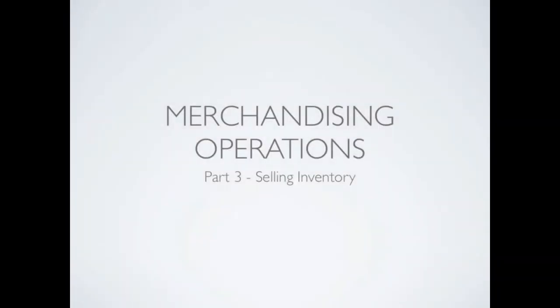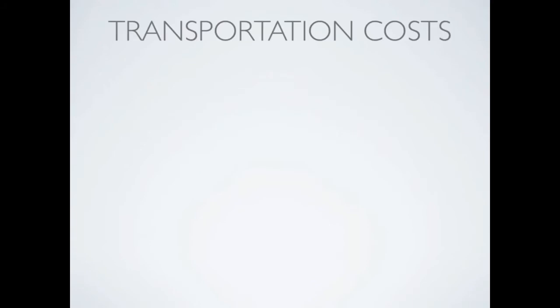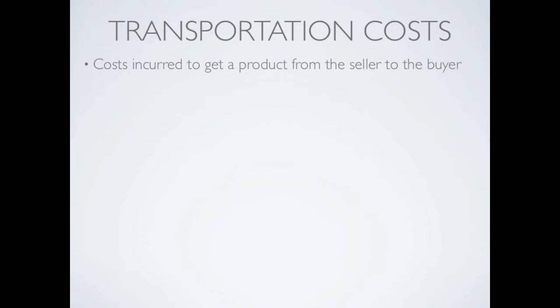This is part three in our merchandising operation series and we'll be discussing the selling of inventory. The first thing we want to look at is transportation costs. Transportation costs are costs that are incurred to get a product from the seller to the buyer. It can happen one of two ways: the buyer could pay shipping or the seller could pay shipping.